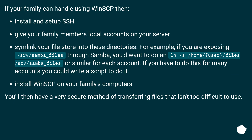If your family can handle using WinSCP, then install and set up SSH and give your family members local accounts on your server. Symlink your file store into these directories — for example, if you are exposing /srv/samba_files through Samba, you'd want to do 'ln -s /home/user/files /srv/samba_files' or similar for each account. If you have to do this for many accounts, you could write a script to do it.